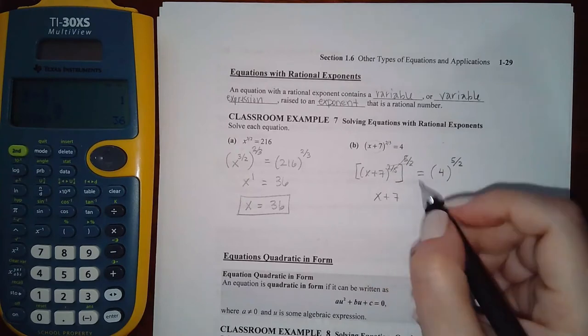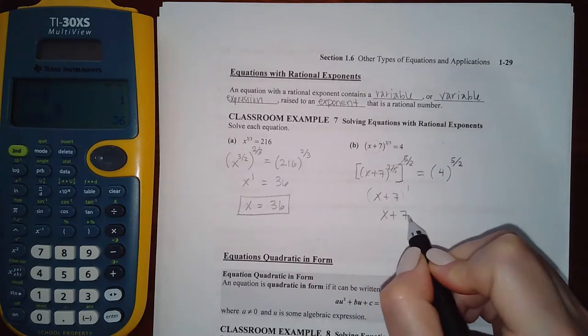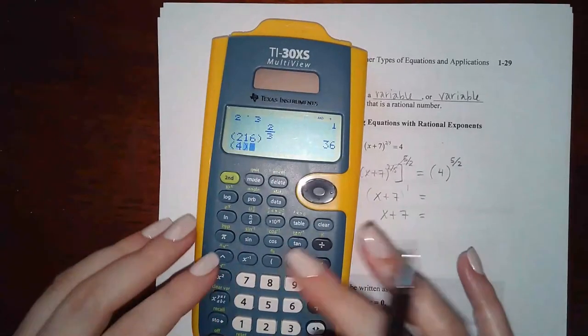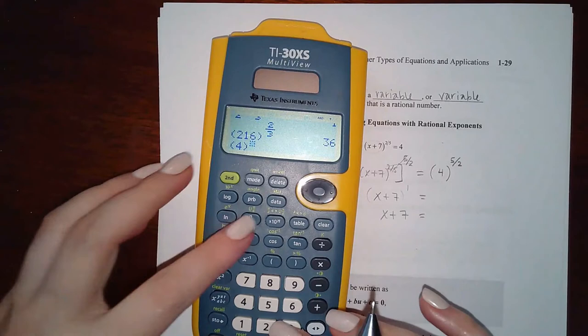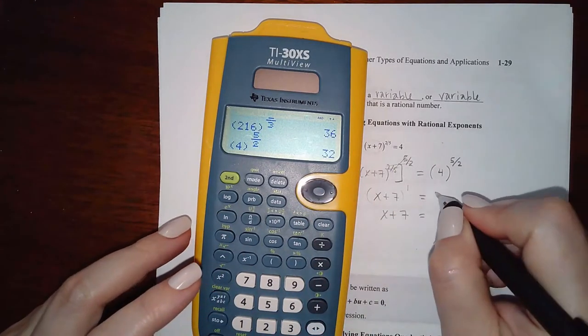Here we know the twos and the fives are going to cancel, leaving me with x to the seven raised to the one power or just x to the seven. And here we're going to do four raised to the fraction five halves and we get 32.